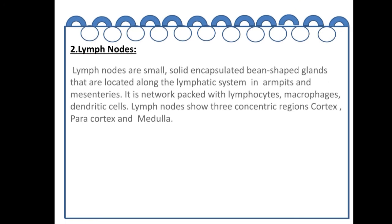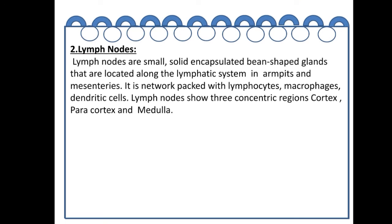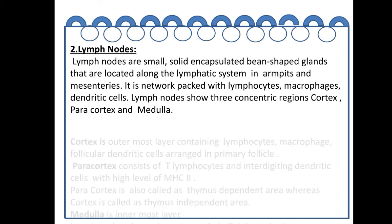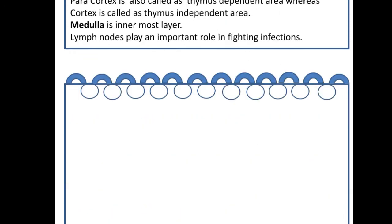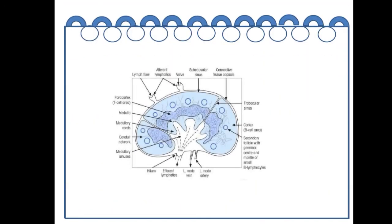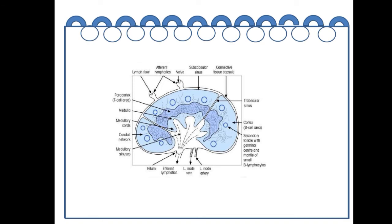Lymph nodes are small, solid, encapsulated, bean-shaped glands located along the lymphatic system in the armpits and mesenteries. They form a network packed with lymphocytes, macrophages, and dendritic cells. Lymph nodes generally show three regions: the cortex, paracortex, and medulla, as can be seen in the diagram.